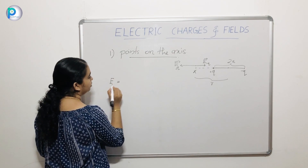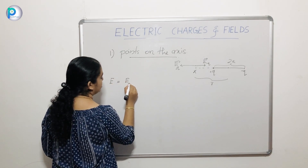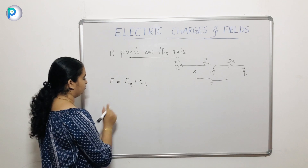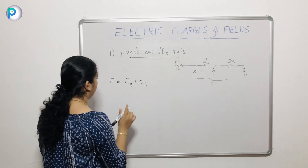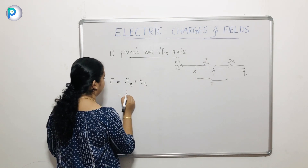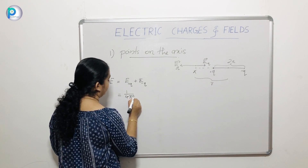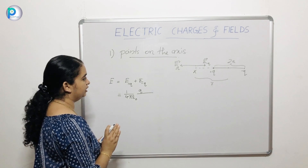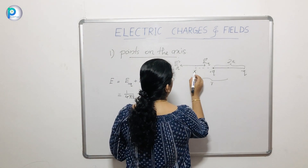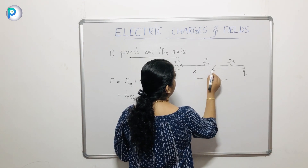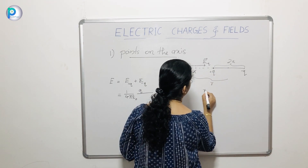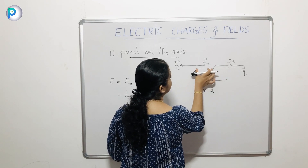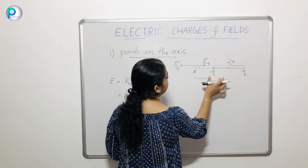The total electric field E is equal to E plus Q plus E minus Q. The electric field equation is 1 by 4π epsilon 0, Q by distance squared. For E plus Q, the distance is R minus A, so E plus Q equals 1 over 4π epsilon 0 times Q over (R minus A) squared.